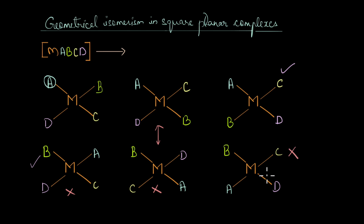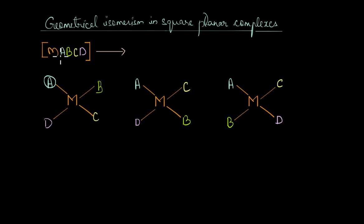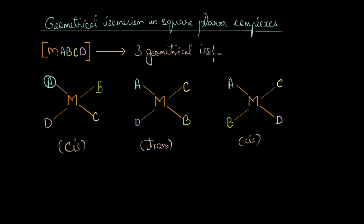You can try the same thing by keeping C or D fixed and moving the other ligands around — you will still find no new unique arrangements beyond the three already identified. So square planar complexes of the type MABCD with four different monodentate ligands will have three geometrical isomers: two cis and one trans isomer.